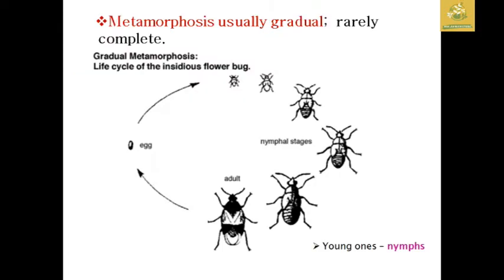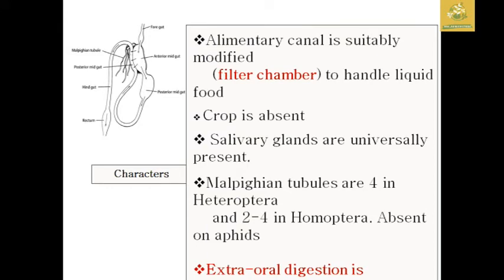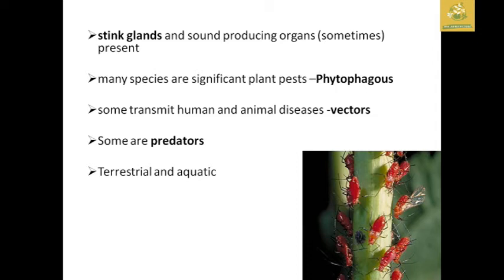Metamorphosis in these insects is usually gradual, rarely complete. Young ones are called nymphs. They have an alimentary canal modified as a filter chamber to handle liquid food obtained from crops. The crop organ in the digestive system is absent. Salivary glands are universally present. Malpighian tubules are four in Heteroptera and two to four in Homoptera, and absent in aphids. Extra-oral digestion is present.